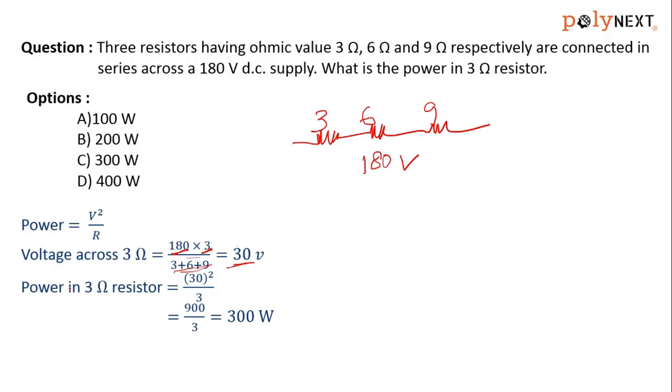Now, power in the 3 ohm resistor equals voltage squared by resistance. 30 squared divided by 3 gives you 300 watts.